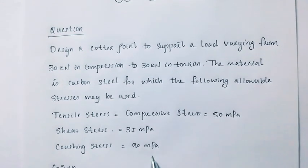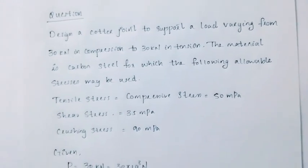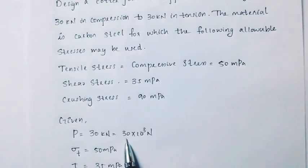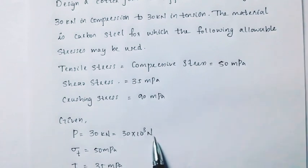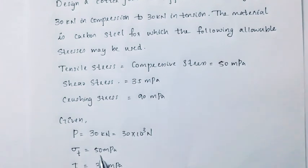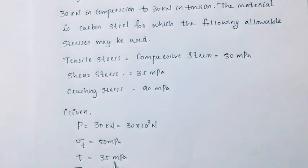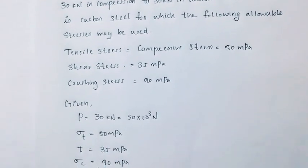Given data: P equals 30 kN or 30 times 10 raised to 3 N. Sigma T is 50 MPa, shear stress is 35 MPa, and crushing stress is 90 MPa.